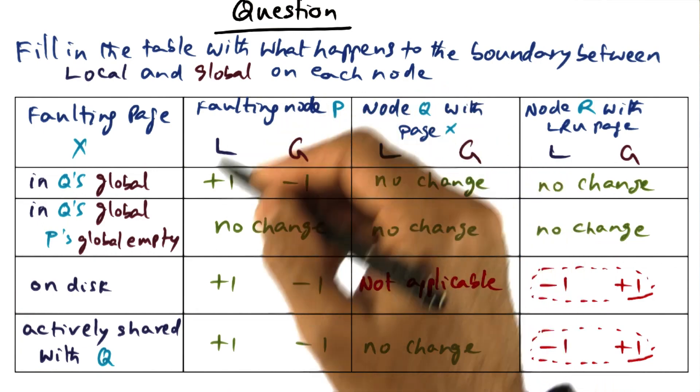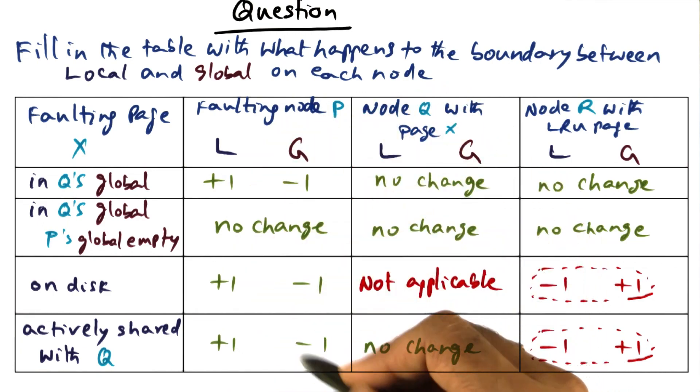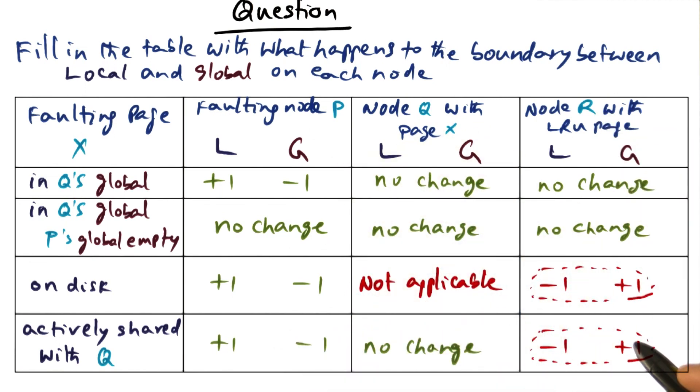And of course, this guy has to send one of its global pages to some other node because the memory pressure as a whole is increasing on node P. This guy is going to send it to node R that has the LRU page.